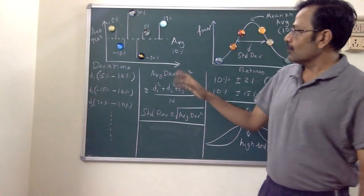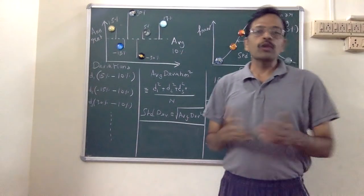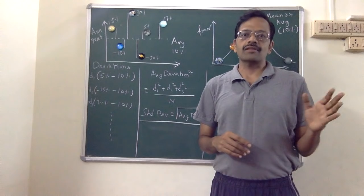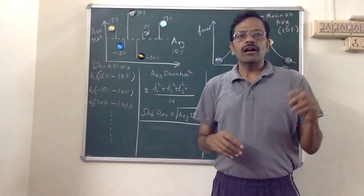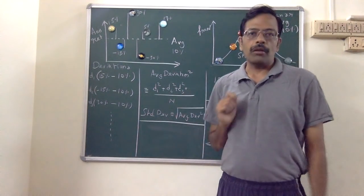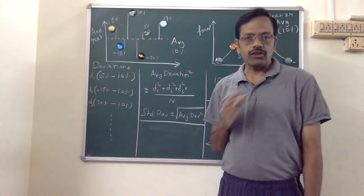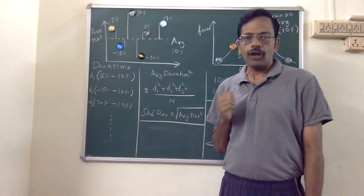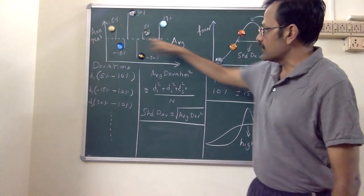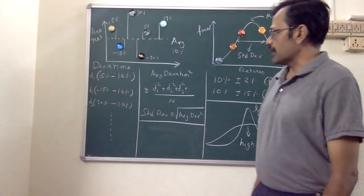Suppose I take the average of all these numbers. Everybody knows how to calculate the average — it is adding all these numbers and dividing by the total number of such numbers. That is not how the average should be defined, but let's say the average for now is 10 percent, which is the dotted line right in the center.